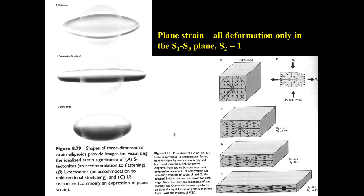These tectonites tell us about the strain state. Plane strain is where all deformation is in the S1-S3 plane — simple flattening. Constriction is where deformation constricts in two directions with strong extension in the third. Plane strain preserves volume and is the more uniform case. Each tectonite corresponds to one of these deformation ellipsoids. We'd expect a lot of foliation to develop unless there's a lot of stretching, so the formation of lineation is really a special condition.